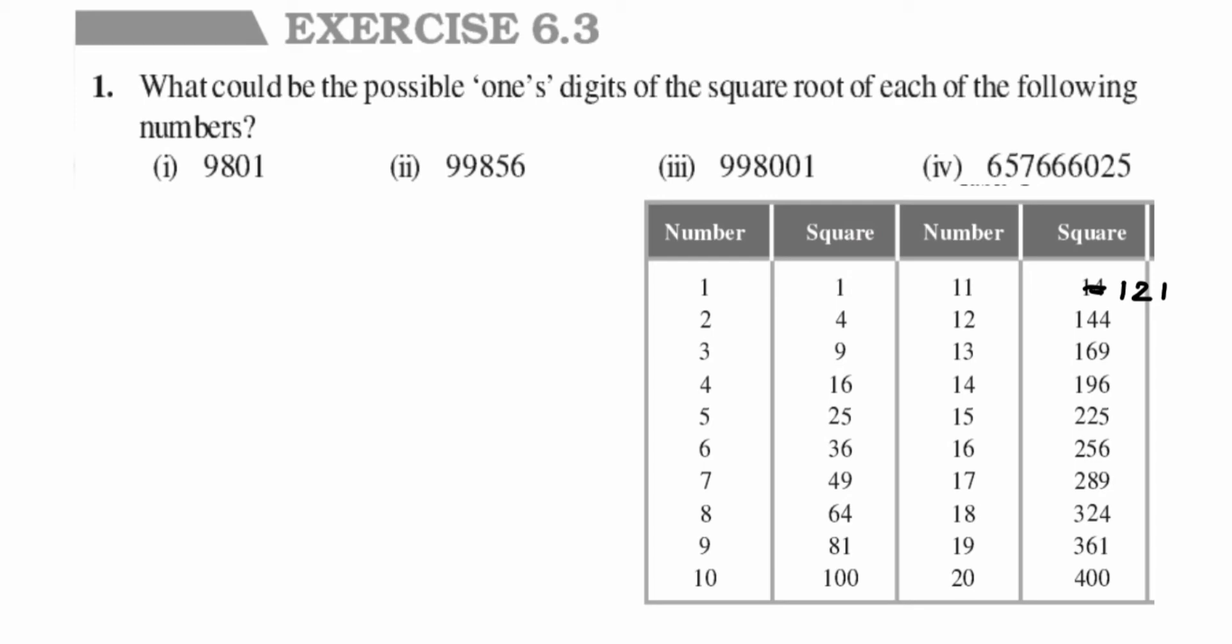Let's take the first question to understand this better. In the first one we have 9801, so we have a 1 at the end. If I take a square root of this number, then whatever answer I'll get, in that answer what will be the ones digit possibly? That is what we have to find out here. To understand this, let us understand this table. I'll just rewrite the number once again: 9801.